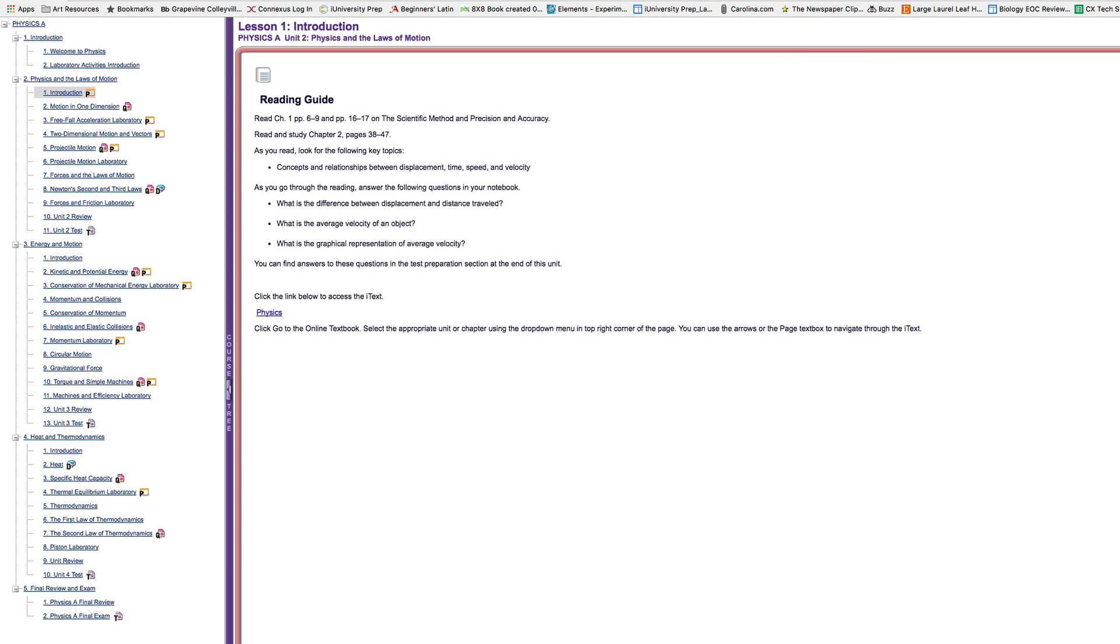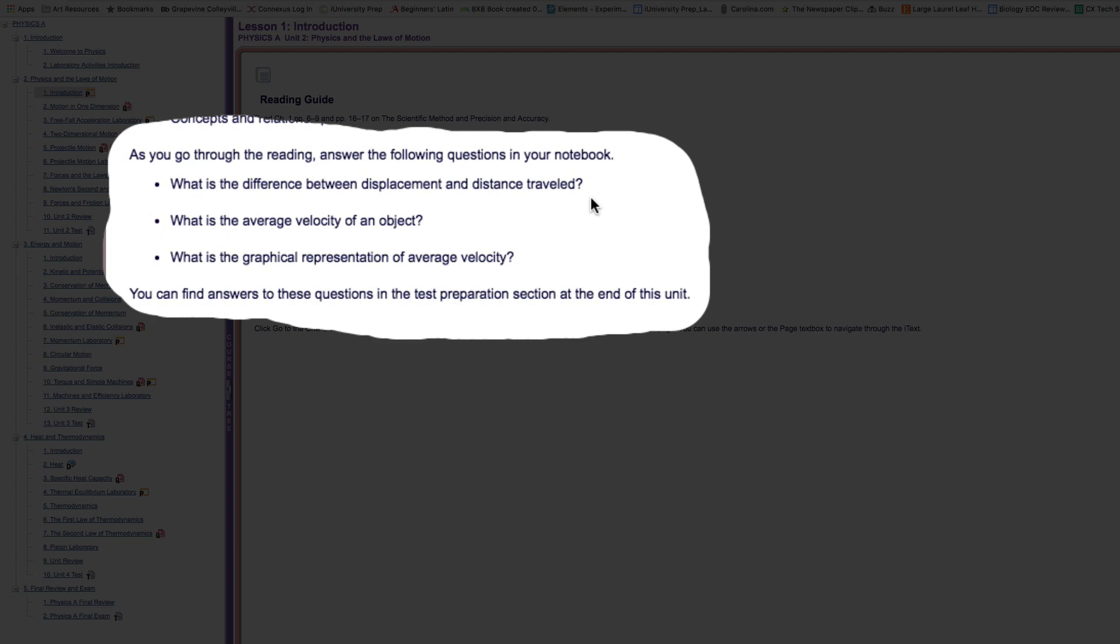The fourth slide is where we actually start looking at things that will help us with our Cornell notes. The reading guide tells us what pages to read in the e-text, and it also gives us some key topics and some questions for your notebook. We're going to transform these questions into our essential questions. Our first one says, what is the difference between displacement and the distance traveled?